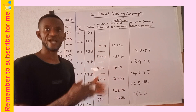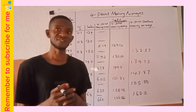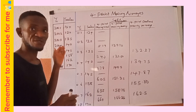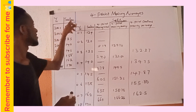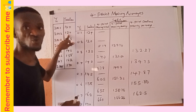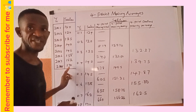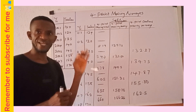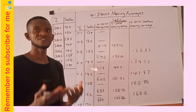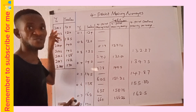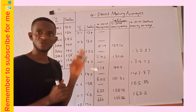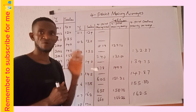In our previous class, we looked at three-point moving averages. Today we have four-point moving averages. The dataset given runs from the year 2001, where the number of sales is 124, down to the year 2008. This is a time series dataset because these observations are recorded sequentially against the time of their occurrence — a time series is a set of observations recorded against time of their occurrence.